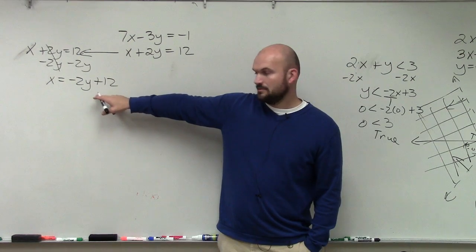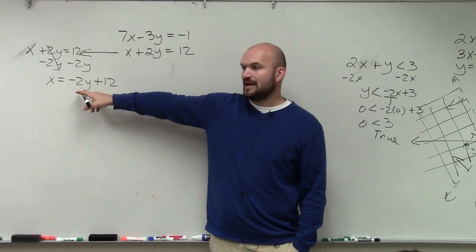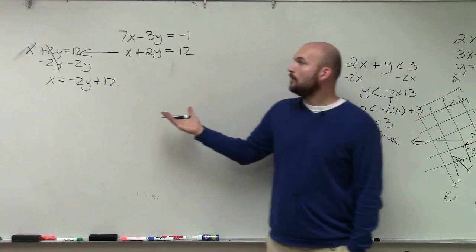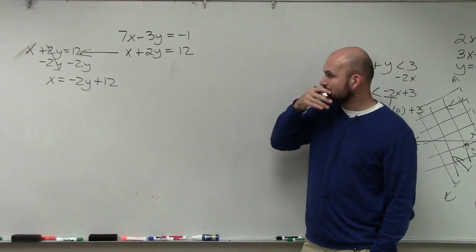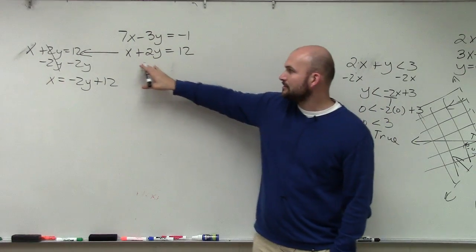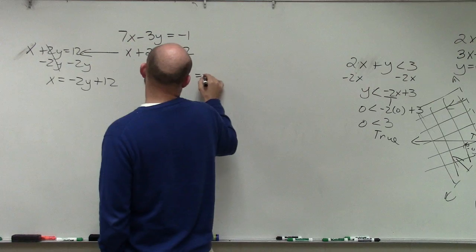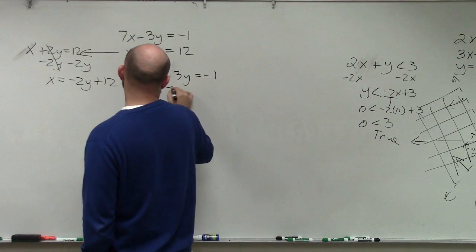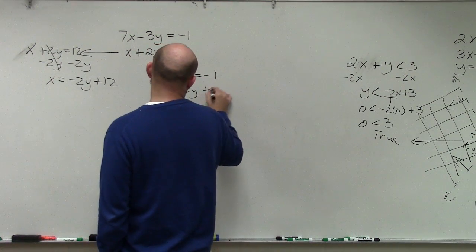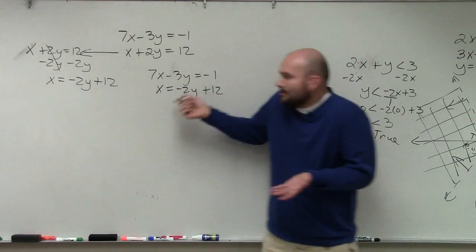I just solved for x. I just put x by itself. Now, the difference with this is, so now I'm going to rewrite my equation as 7x minus 3y equals negative 1, and x equals negative 2y plus 12. So all I did, I'm just rewriting the problem.